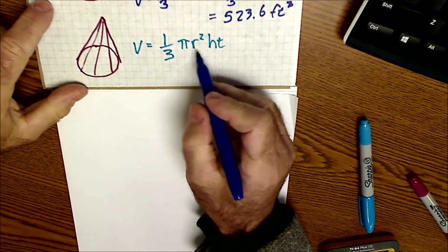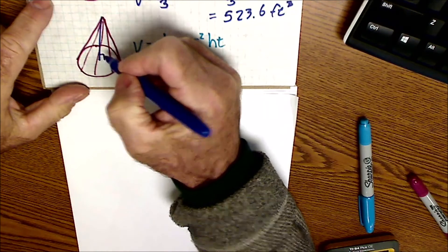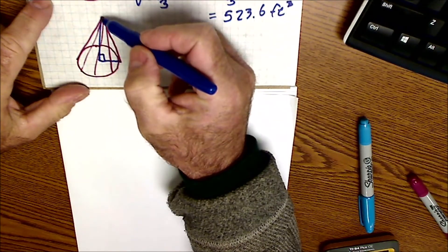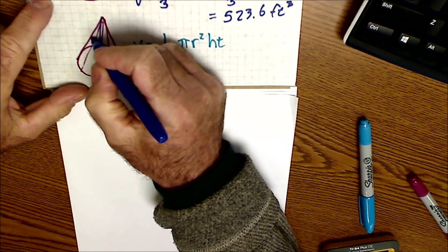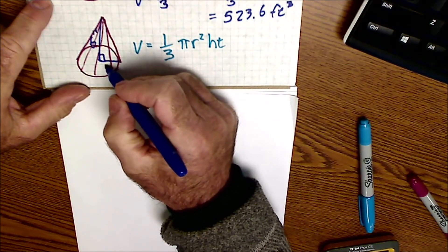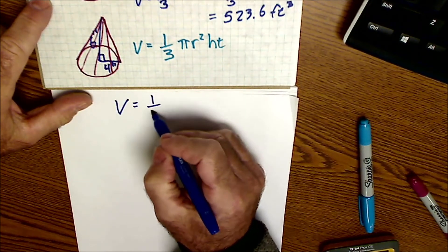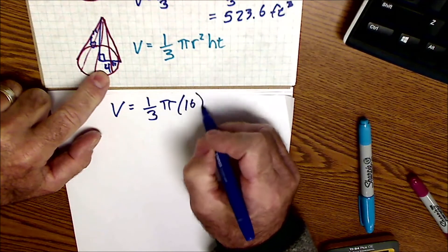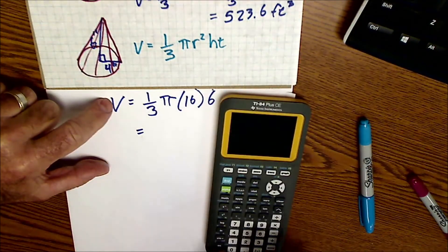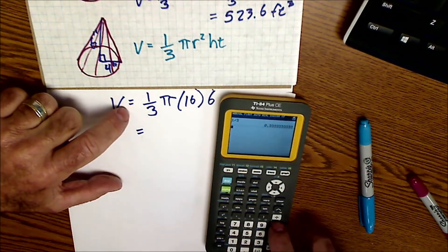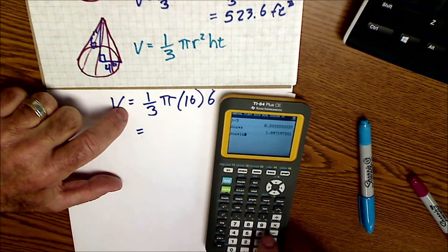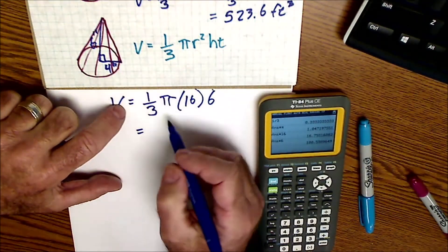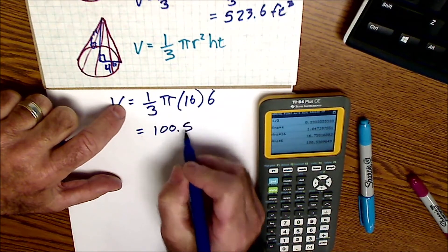Lastly, let's take a look at the volume of a cone — that's going to be the volume of a cylinder divided by 3. Here's a cool wooden cone. The volume of a cone is 1/3 πr²h. This is only for a right cone, meaning the top of the cone is perpendicular to the base. Let's say we have a height of 6 inches and a radius of 4 inches. Plugging those in: 1/3 times pi times r² — the radius 4 squared is 16 — times the height of 6. On the calculator: 1 divided by 3, times pi, times 16, times 6. The volume of that cone is 100.5 cubic inches.